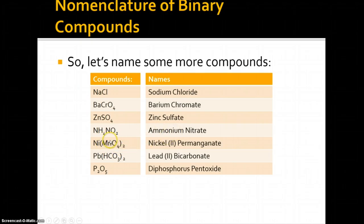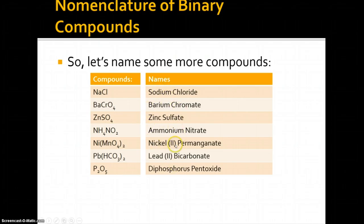Two permanganates bonded to a nickel is nickel(II) permanganate. Two bicarbonates bonded to lead is lead(II) bicarbonate. And P2O5 — two phosphorus and five oxygens — that's diphosphorus pentoxide. Notice that last one is a little different: 'di-phosphorus' tells us there are two phosphorus atoms and 'pentoxide' tells us there are five oxygens. We can actually reconstruct the entire formula from the name, which is remarkable — we could not do that with the others.